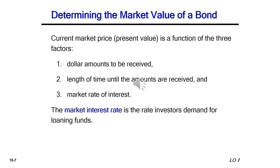How can we determine the market value of a bond? Just as with any investment, you need to calculate the present value of what you expect the investment to be in the future. With bonds, you can figure out the current market price — the present value — based on three factors: the dollar amounts to be received, the length of time until the amounts are received, and the market rate of interest. The market rate is the rate investors demand for loaning funds, affected by factors such as interbank interest rates and level of risk.